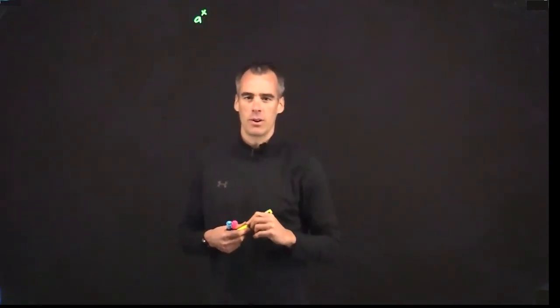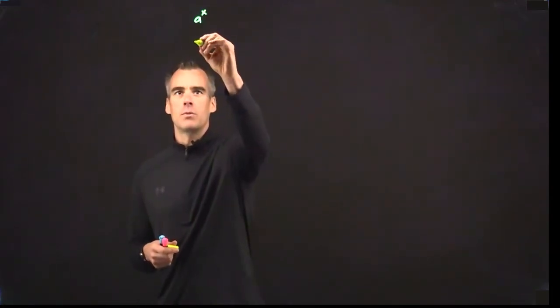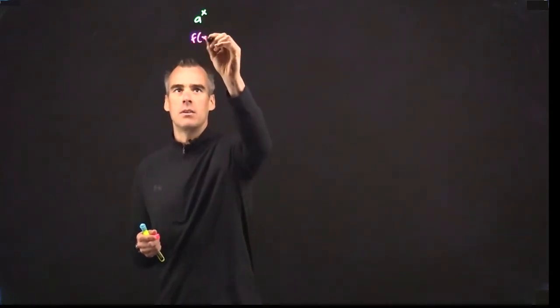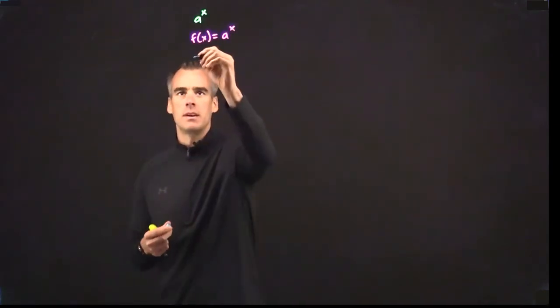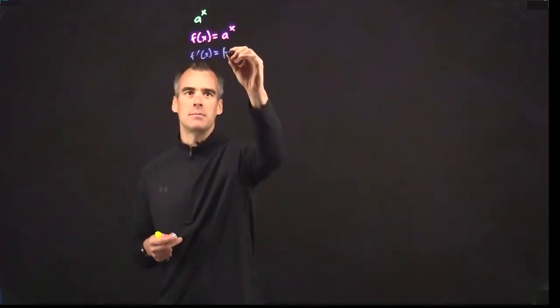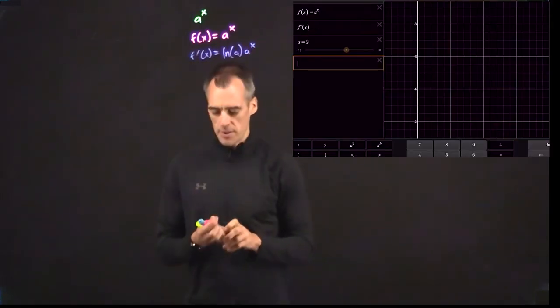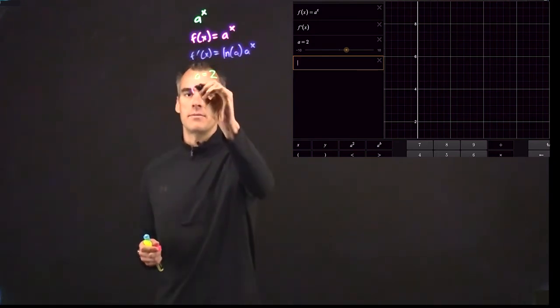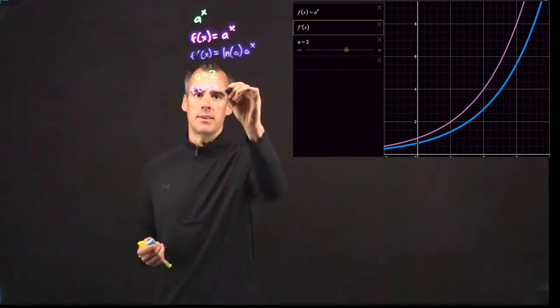I'm going to plot this out. Let's say we call our f of x function in red e to the x, and in blue our f prime of x, the derivative, as we plot it out. If you take the derivative, it's going to be natural log of a times a to the x. Let's first look at when a equals 2. When a equals 2, we find that the function f of x is going to be greater than its derivative f prime of x.